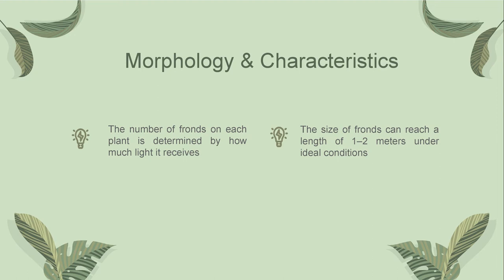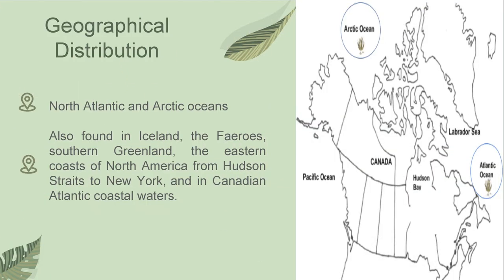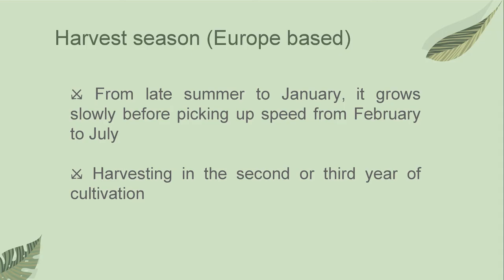Let's proceed to the geographical distribution and harvest of this species. Laminaria digitata is located in the North Atlantic and Arctic Oceans. It is also found in Iceland, the Faroes, Southern Greenland, the eastern coast of North America from Hudson Straits to New York, and in Canadian Atlantic coastal waters. For the harvest season in Europe, it is from late summer to January where it grows slowly before picking up speed from February to July. Harvesting usually occurs in the second or third year of cultivation, with a season beginning in April or May and lasting until October.